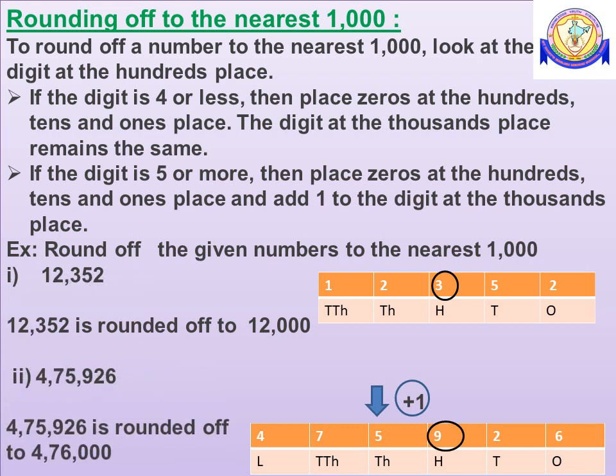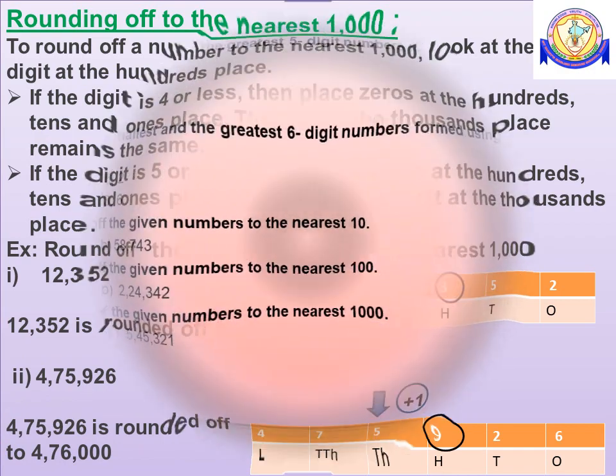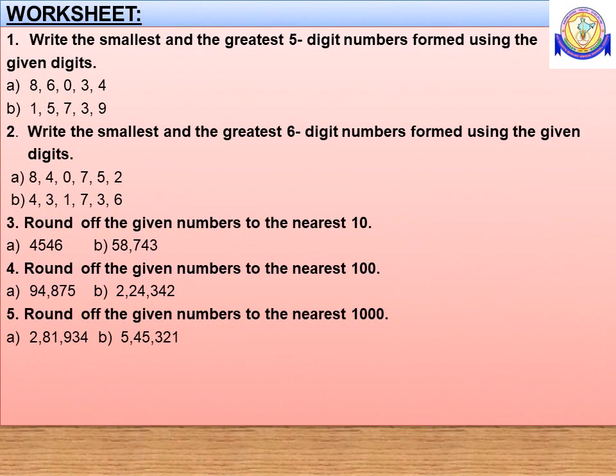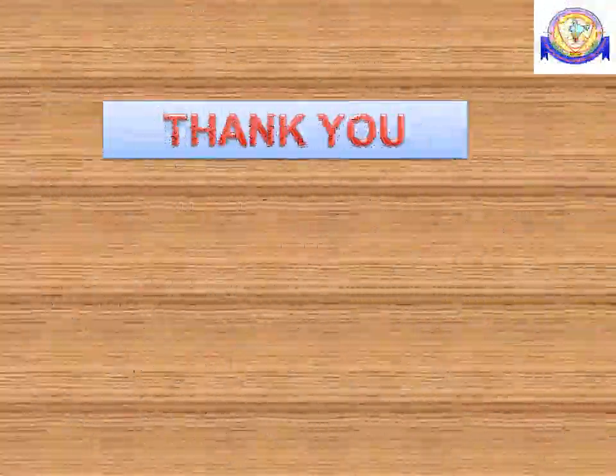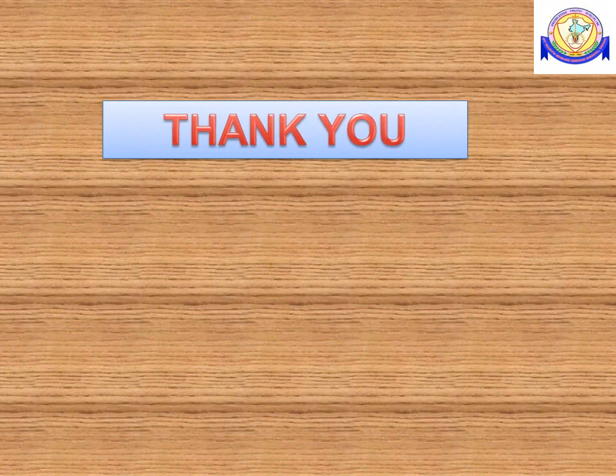4,75,926 is rounded off to 4,76,000. Children, there is a worksheet which consists of problems on the discussed concepts. Please solve this in your notes. Thank you, children.